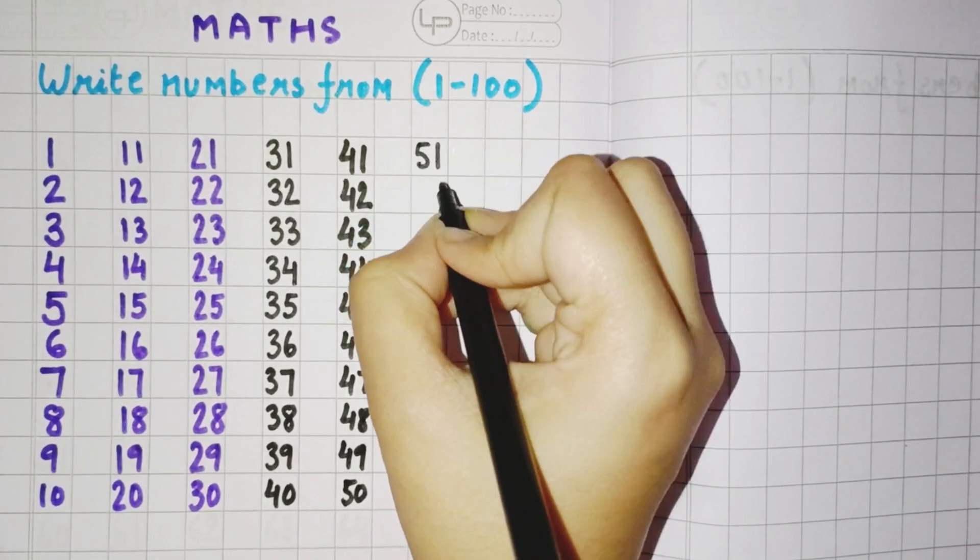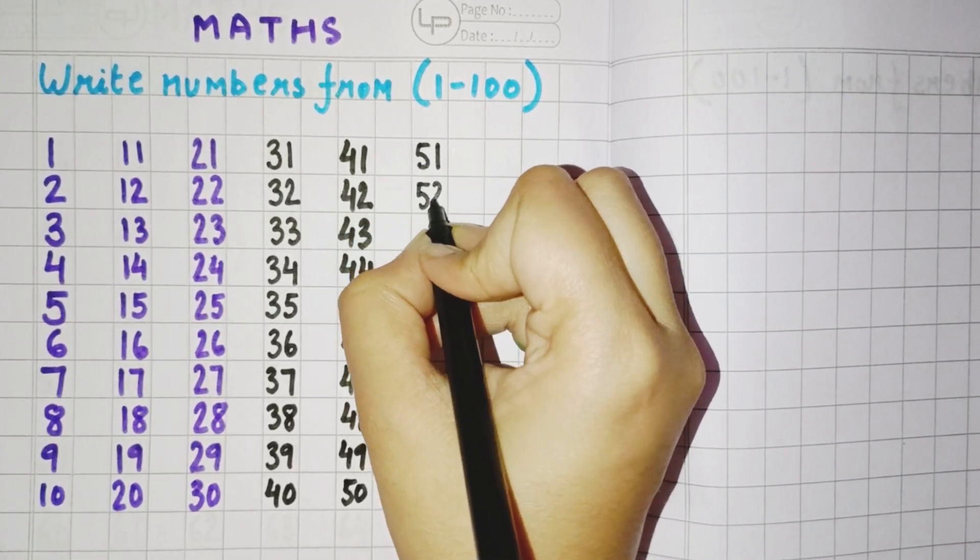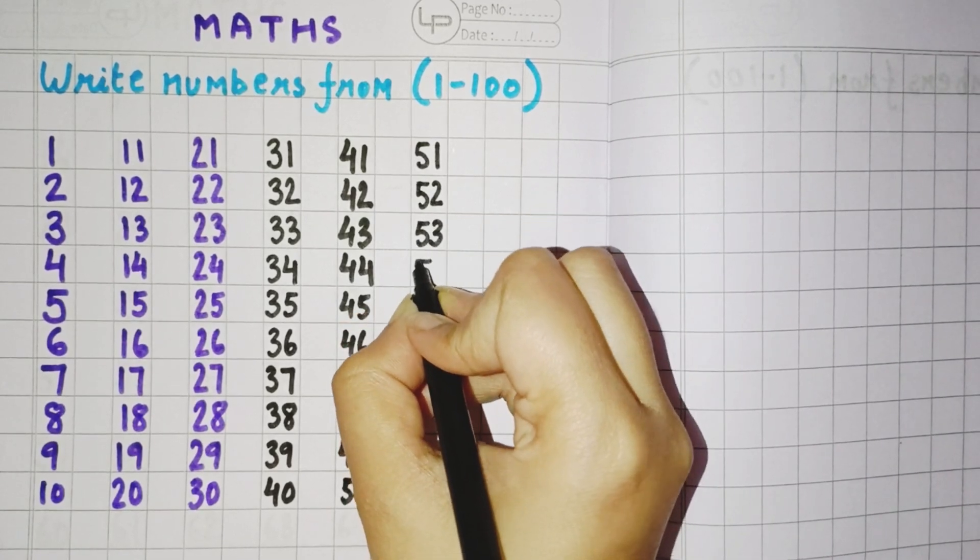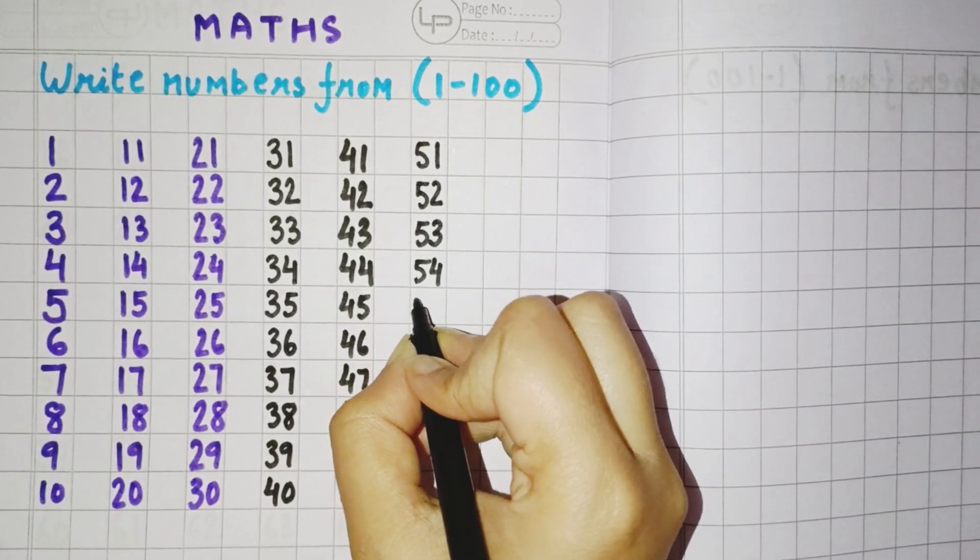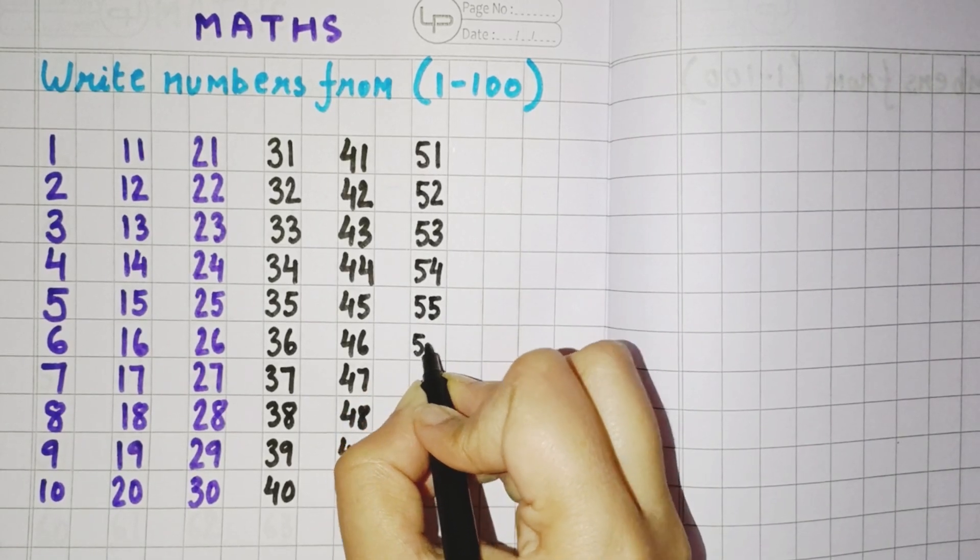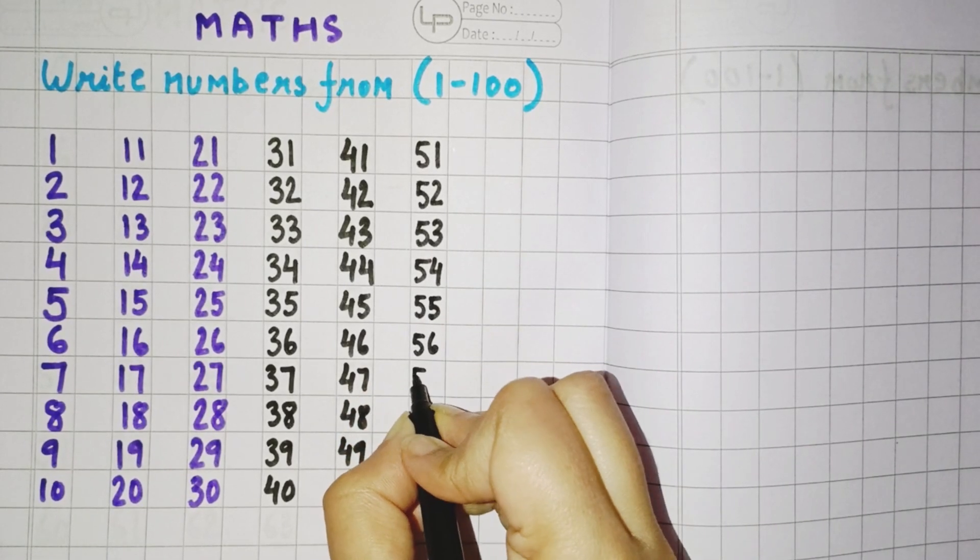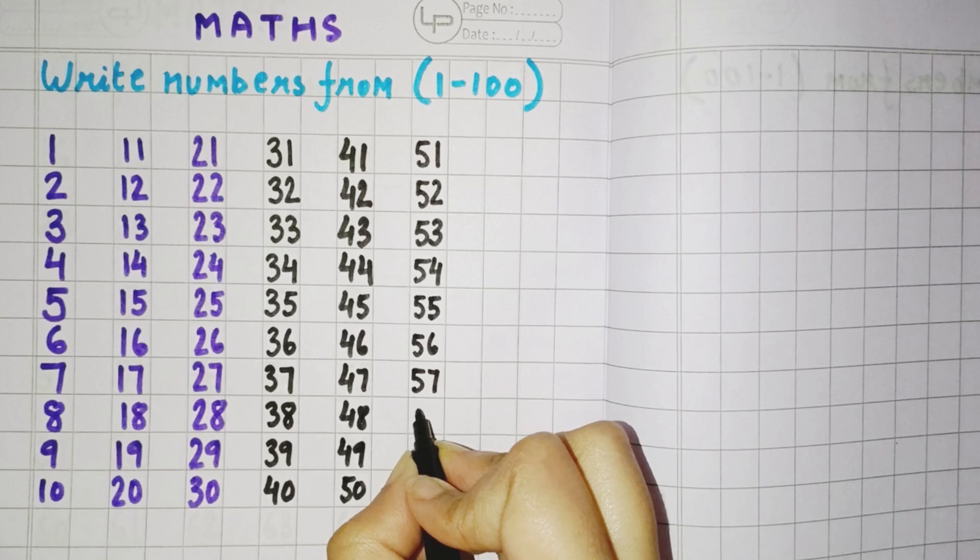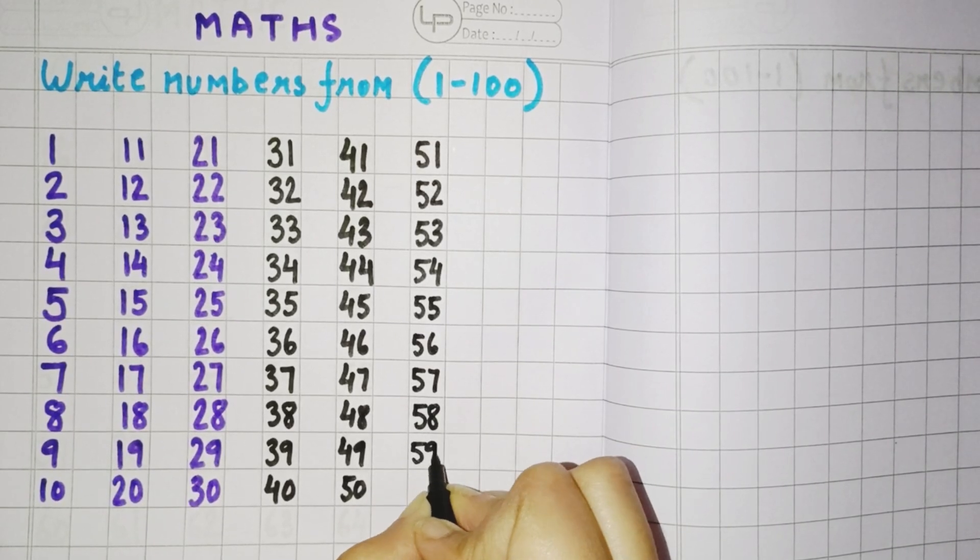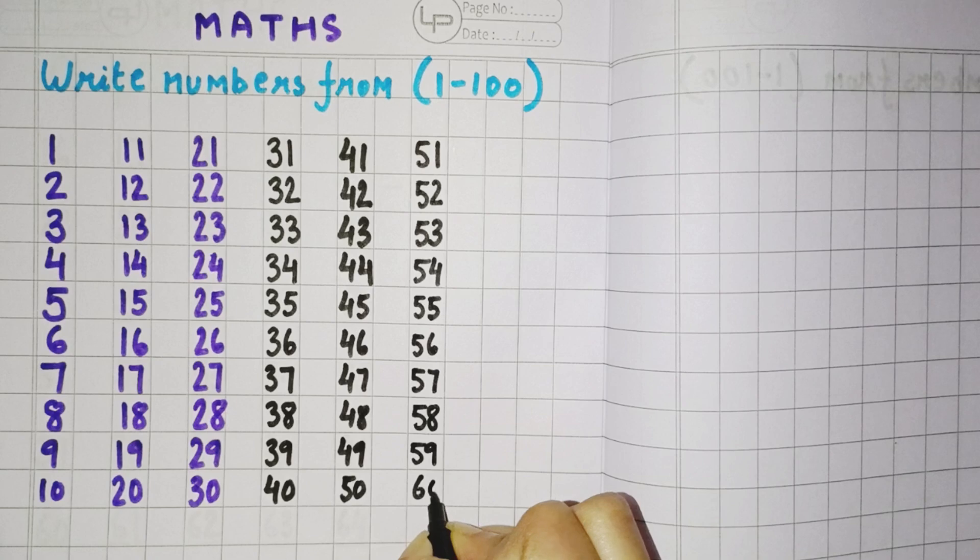5, 51, 51. 5, 52, 52. 5, 53. 5, 54, 54. 5, 55. 5, 56. 5, 57. 5, 58. 5, 59. 6, 0, 60.